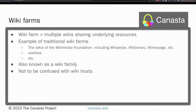A wiki farm is a collection of wikis sharing underlying resources and typically relating to a common cause — usually sharing the same web server and potentially the same user database. The hundreds of wikis hosted by the Wikimedia Foundation operate as a large wiki farm, all hosted on the same infrastructure. Any of their web servers can handle any of the hundreds of Wikimedia wikis — English Wikipedia, German Wikipedia, English Wikivoyage, Chinese Wiktionary.